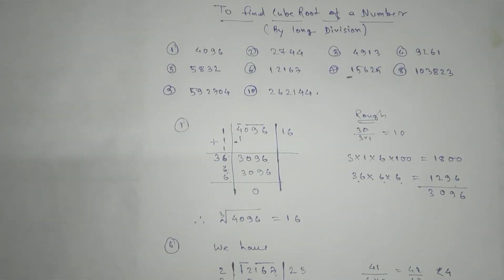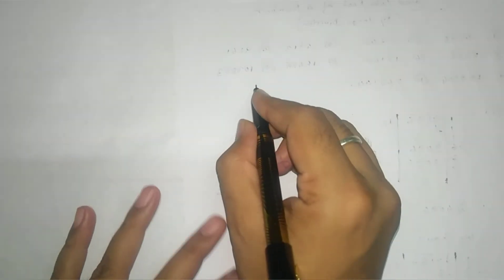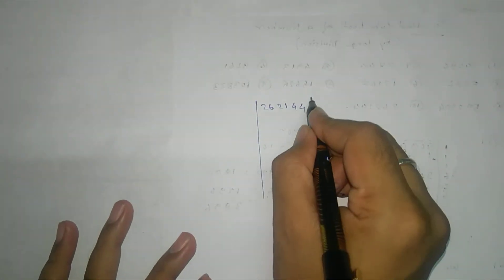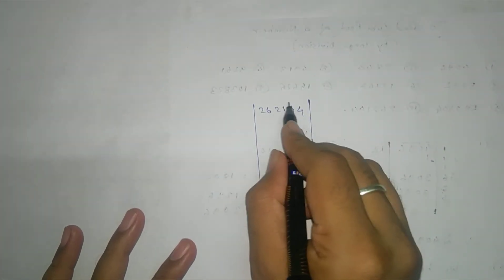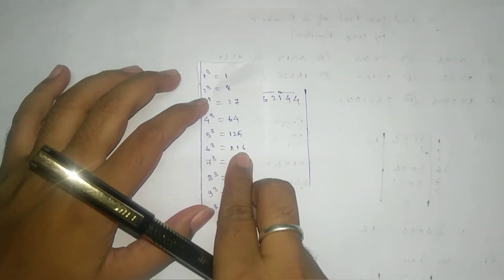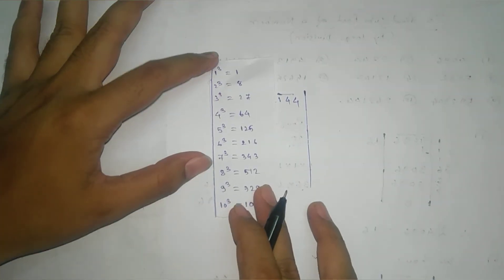Next, we will enter into the last one. We have 2, 6, 2, 1, 4, 4. So we will make 3 sets: 144 and 262. Now you need to think about the cube — which one is very close to 262? 6 cubed is very close to 262. So we go with 6 cube. Take 6 here, add here — we get 18. And 2, 1, 6 and 6 — we will get 4 remaining. Take that part here.